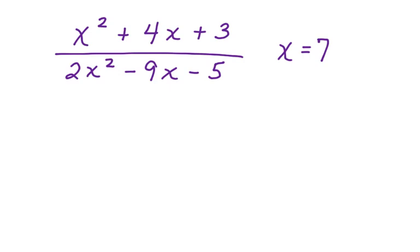Did you know that you can use a calculator to help you in evaluating algebraic expressions? Let's take a look at how to do this. Here's our algebraic expression: x squared plus 4x plus 3, divided by 2x squared minus 9x minus 5. And x is equal to 7. So the first thing we're going to do is substitute 7 anywhere we see an x.